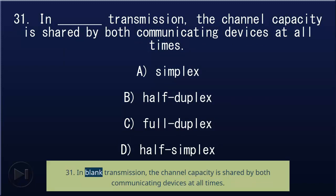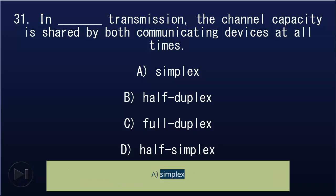31. In blank transmission, the channel capacity is shared by both communicating devices at all times: A) simplex, B) half-duplex, C) full-duplex, D) half-simplex. Answer: C, full-duplex.